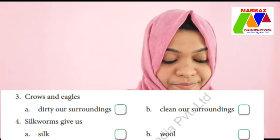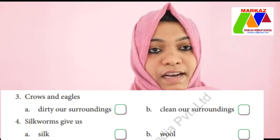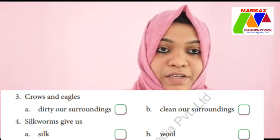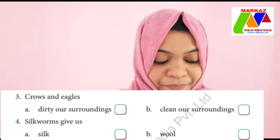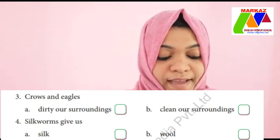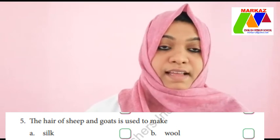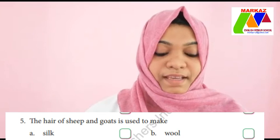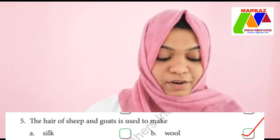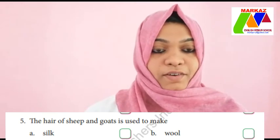Fourth one: silkworms give us silk or wool? Silkworms give us silk, so all of you take silk. Fifth one: the hair of sheep and goats is used to make silk or wool? Used to make wool. The hair of sheep and goats is used to make wool. All of you take wool.